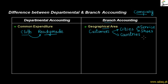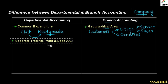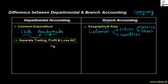So, customers are growing and in different areas the company keeps its business. One department is made to support the other department. In departmental accounting, every department has a separate trading, profit and loss account so that it can show how much profit or loss that product or department has generated.